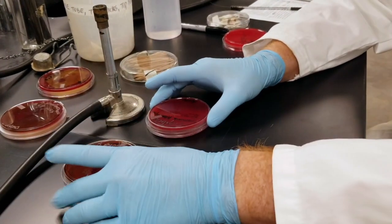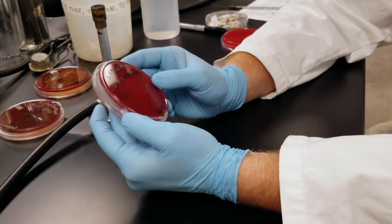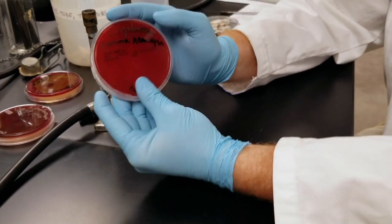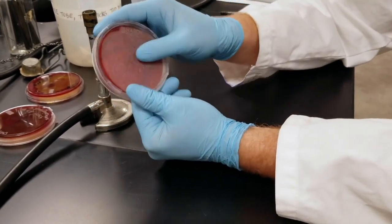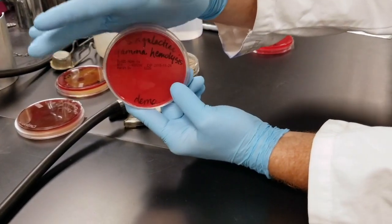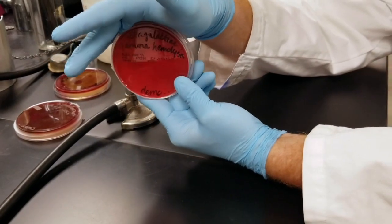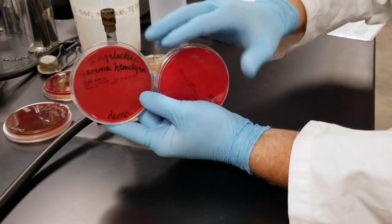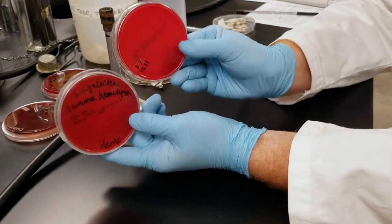Next, we have gamma hemolysis. So gamma hemolysis, in this plate you can't quite see it, we do have positive growth. But in gamma hemolysis, these red blood cells are not getting lysed. So it's going to be similar in appearance to before you even plate.